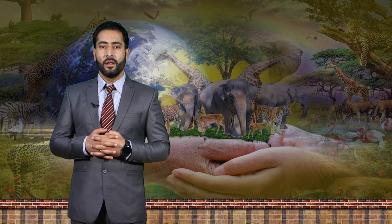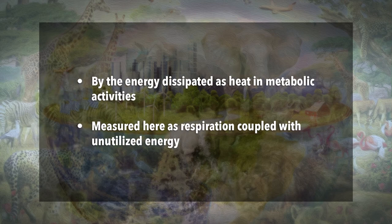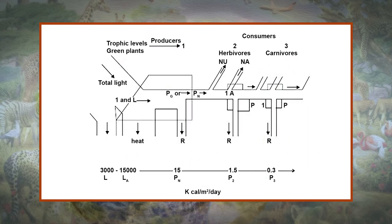Since there is one-way flow of energy, the system would collapse if the primary source — the sun — were cut off. A progressive decrease in energy level is seen at each trophic level. This decrease is accounted for first by the energy dissipated as heat in metabolic activities, and second by energy measured as respiration coupled with unutilized energy, as shown in the energy flow diagram. The simplified energy flow diagram depicts three trophic levels shown as boxes numbered 1, 2, and 3 in a linear food chain.